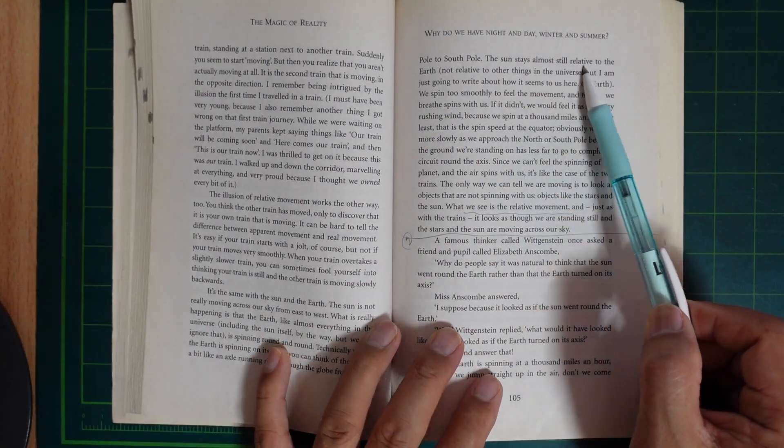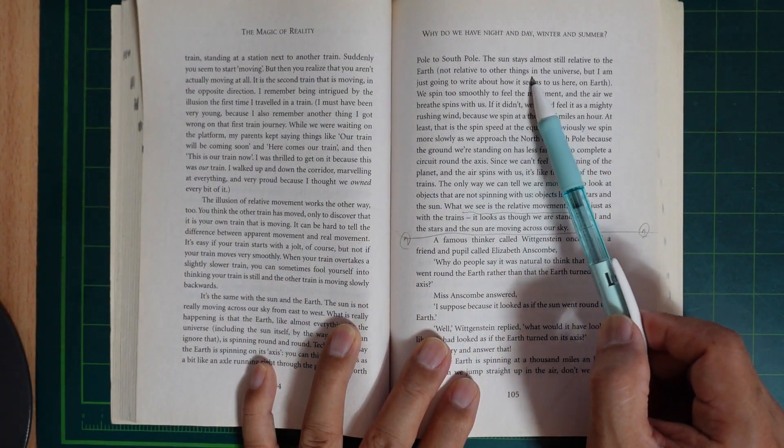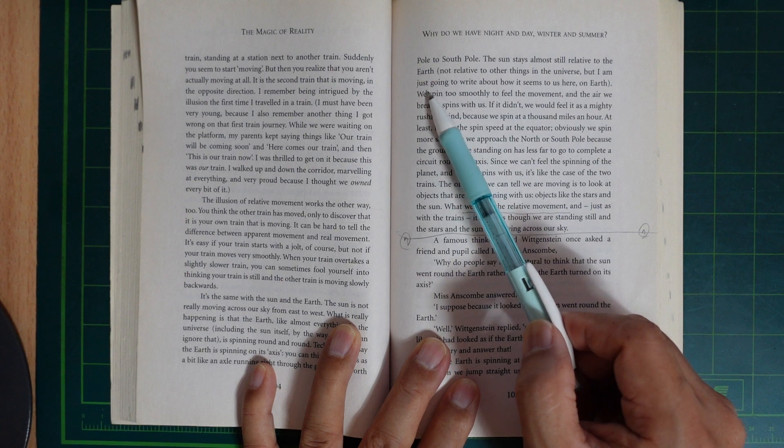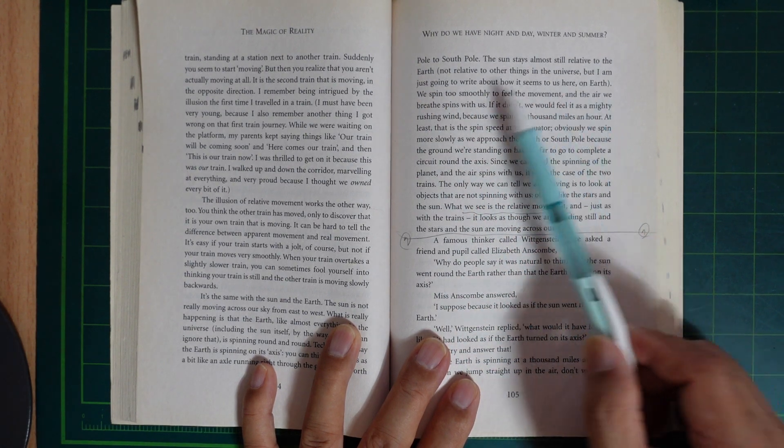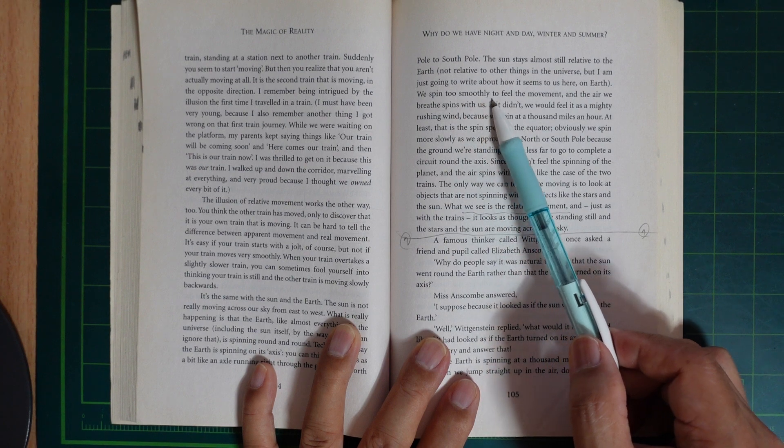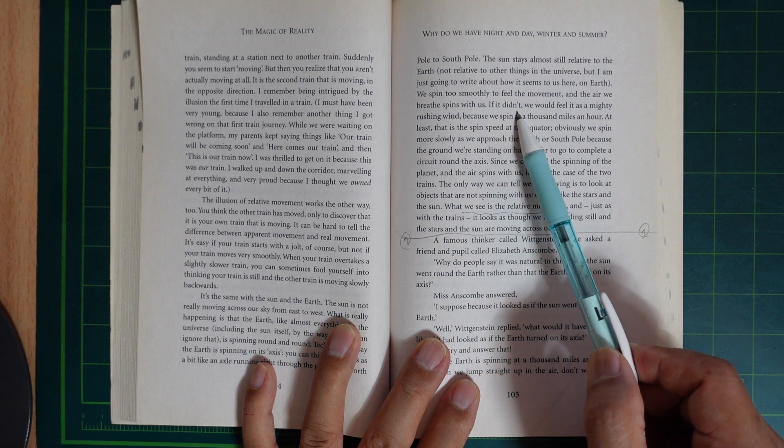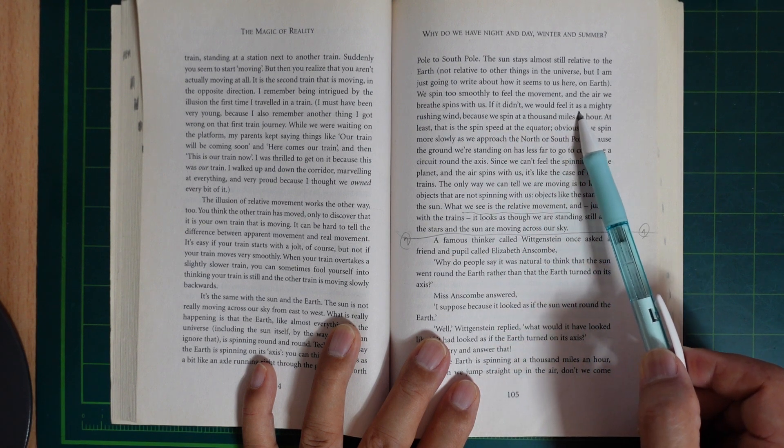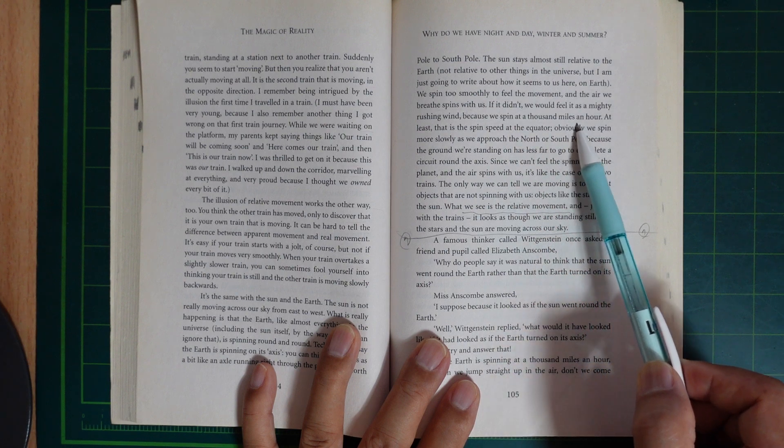The sun stays almost still relative to the earth. Not relative to other things in the universe, but I am not going to write about them. Here on earth, we spin too smoothly to feel the movement. And the air spins with us. If it didn't, we would feel it as a mighty rushing wind, because we spin a thousand miles an hour.